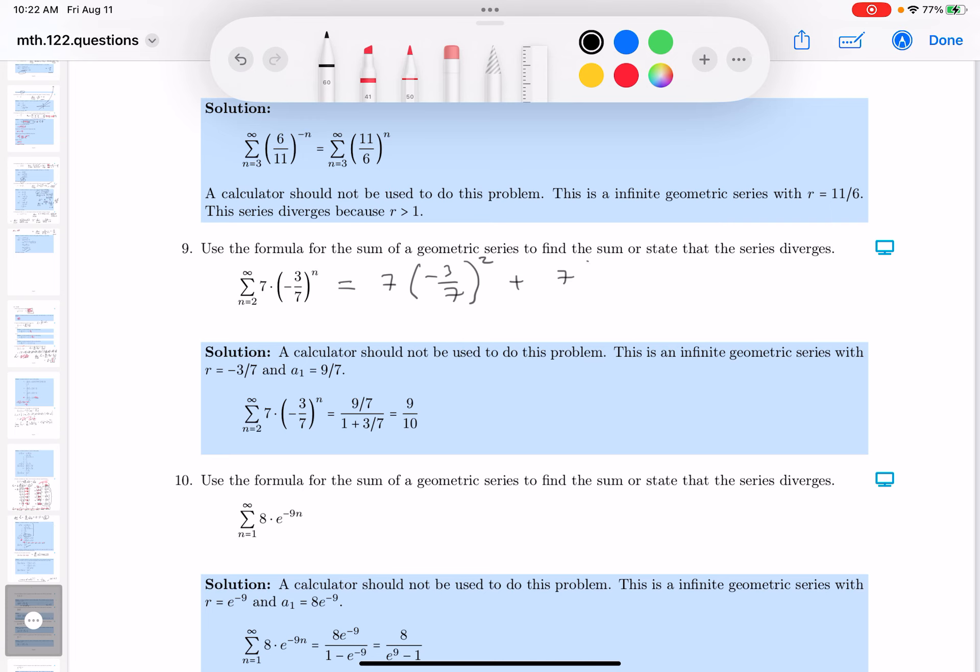Next term is going to be 7 minus 3 times 7s to the third power, and then you get 7 minus 3 times 7s to the fourth power. What I'm going to do is factor out 7, and I'm going to factor out minus 3 times 7s squared. What are you left with? 1 plus minus 3 times 7s plus minus 3 times 7s squared, and so on.